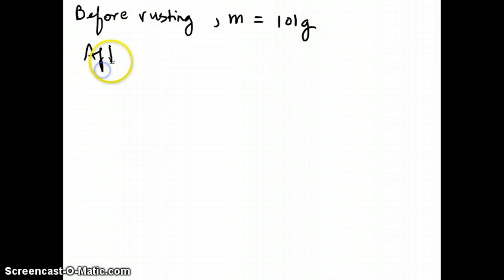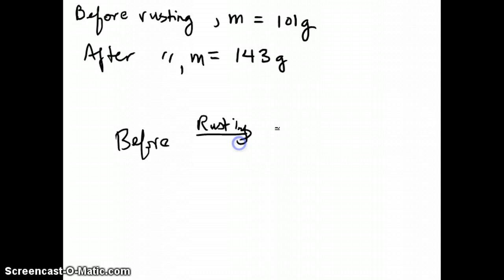So let's solve this problem now. Remember that before rusting, the pot has a mass of 101 grams. And after rusting, the mass is equal to 143 grams. Now rusting here is our chemical reaction, so you can think of it: here's before, and then here's rusting happening, and then here's after. And so the conservation of mass is basically the mass here and the mass here has to be the same.